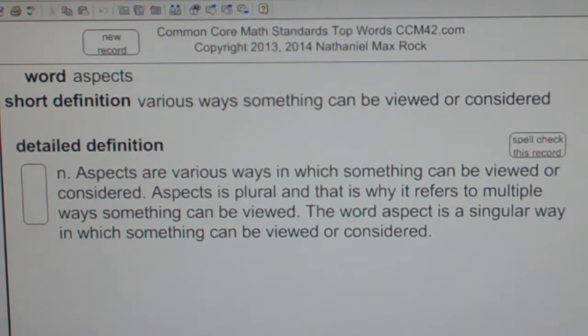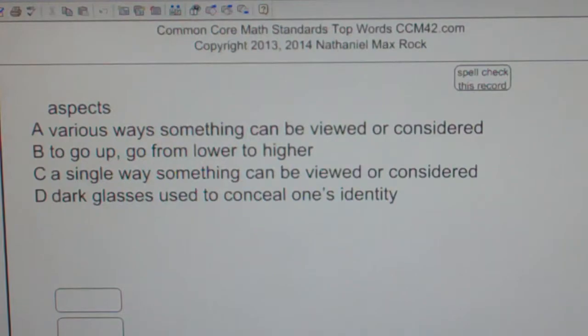Multiple choice question. Aspects. A. Various ways something can be viewed or considered. B. To go up, go from lower to higher. C. A single way something can be viewed or considered. D. Dark glasses used to conceal one's identity.